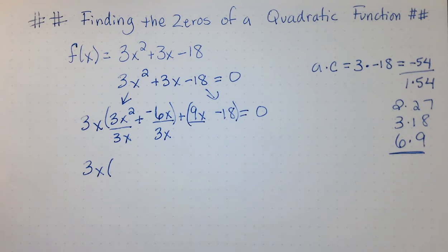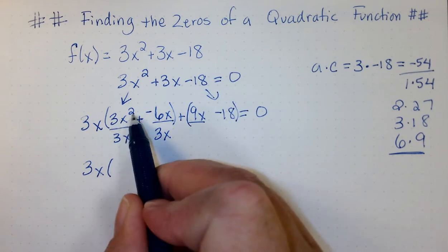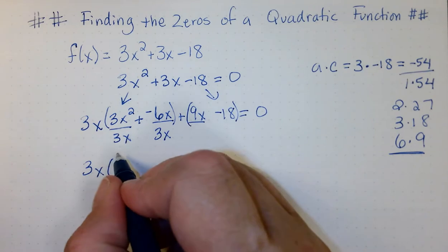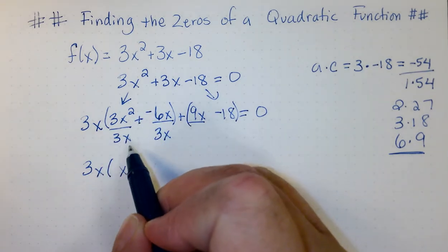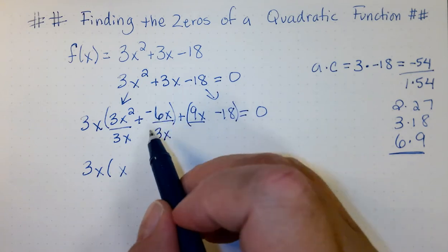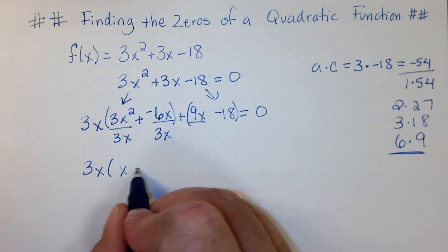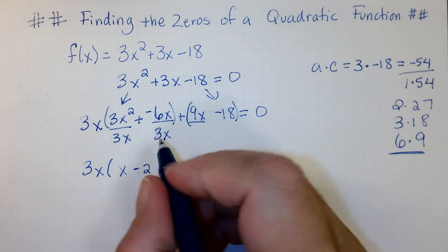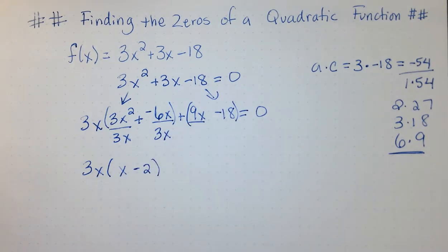What am I left with? So, 3x squared divided by 3x is going to give me just x because the 3's cancel and x squared over x is just x. Negative 6x over 3x is negative 2. The x's here are going to cancel. So, my first factor, I have 3x times x minus 2.